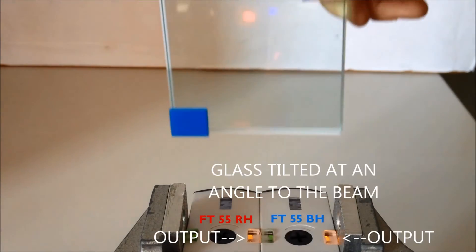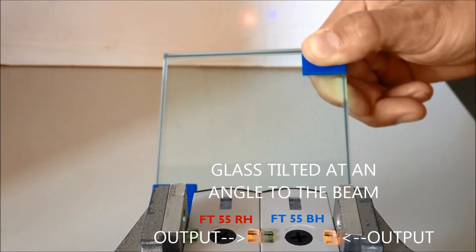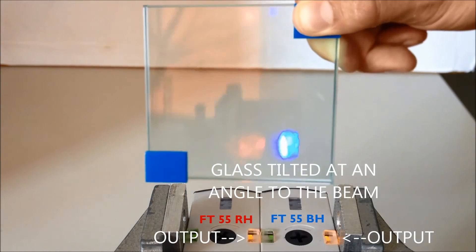You can see here that at some angles the red light will flicker off but the blue light stays on steady regardless of the angle of the target.